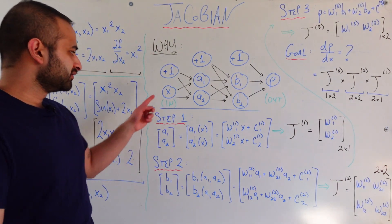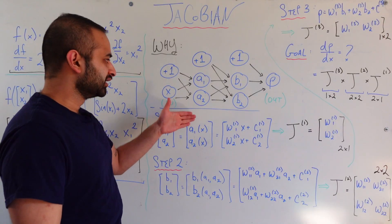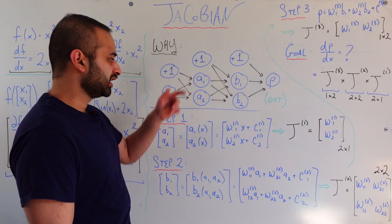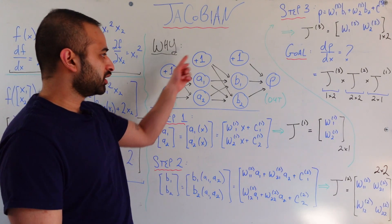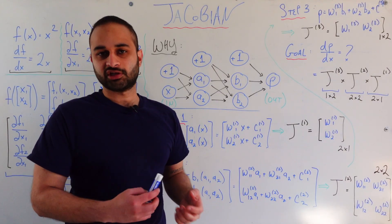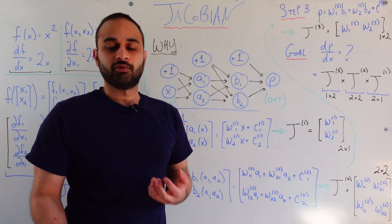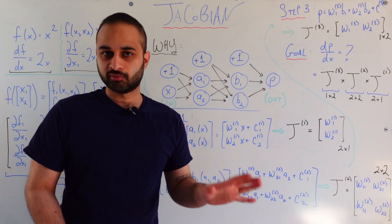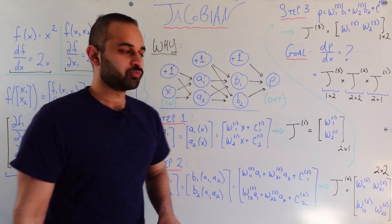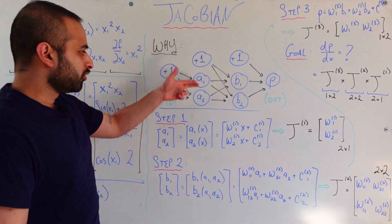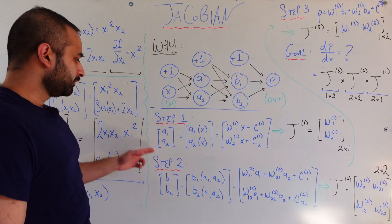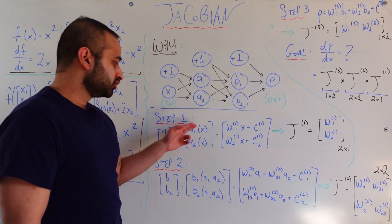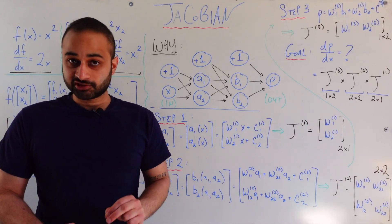The first step is that this x goes to the first hidden layer which consists of two numbers a1 and a2. So by the way, these plus ones are not variables, they're just there to represent the bias term which won't really even be that important to the model, I just wanted to do this justice. So the first layer is a1 and a2 which is given here. So this vector a1 and a2, a1 and a2 are both functions of a single variable x.